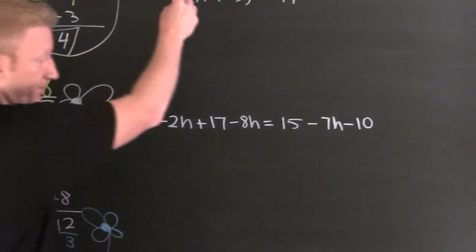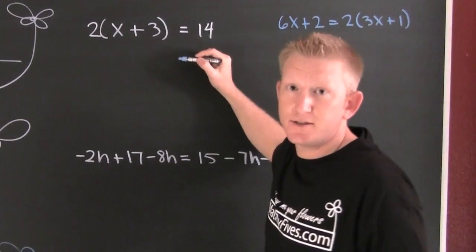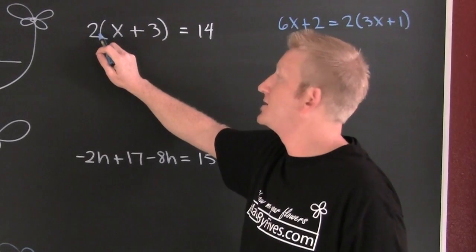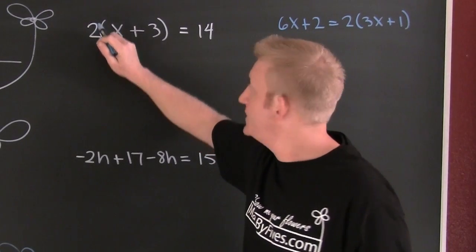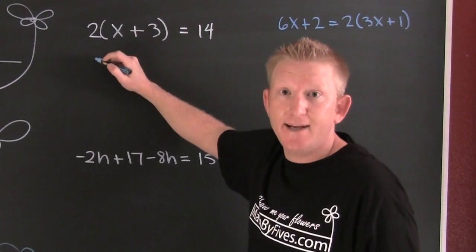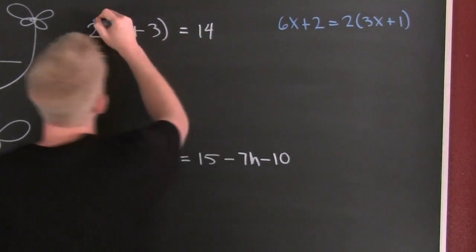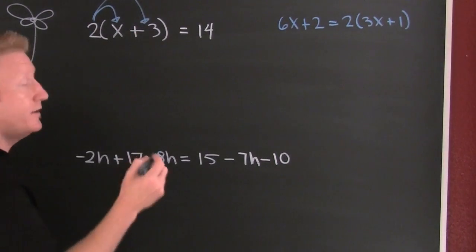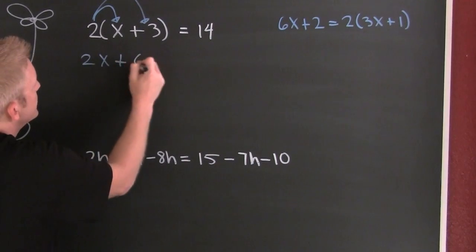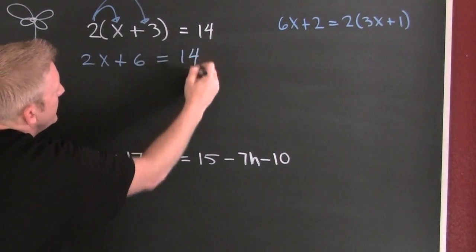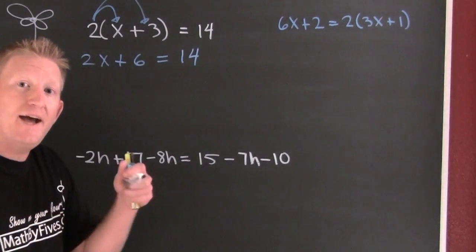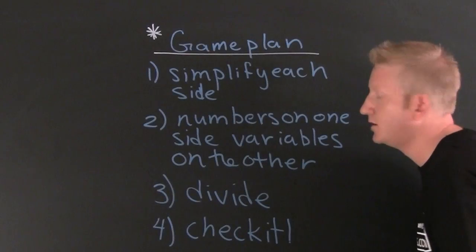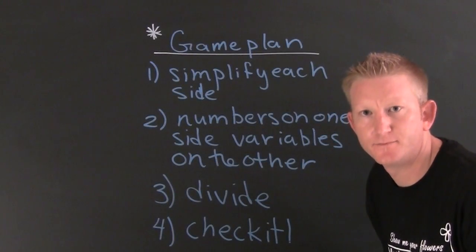Now I'm looking at this one — whoa, I've got a number on the outside of the parentheses. So I'm gonna use the distributive property of multiplication over addition. And I will have 2x plus 6, and that's gonna be equal to 14. I turned something I didn't know how to do into something I do know how to do.